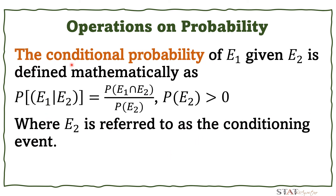Now let's proceed to conditional probability. The conditional probability of E1 given E2 is defined as: P(E1 | E2) = P(E1 ∩ E2) / P(E2), where P(E2) must be greater than 0. E2 is referred to as the conditioning event.